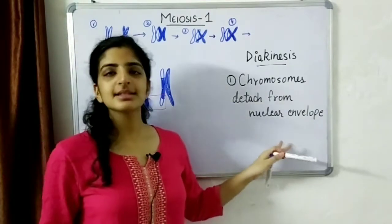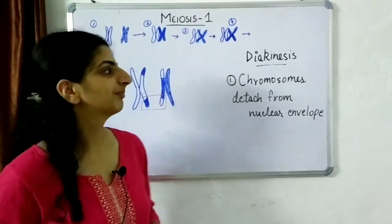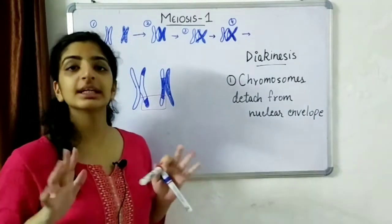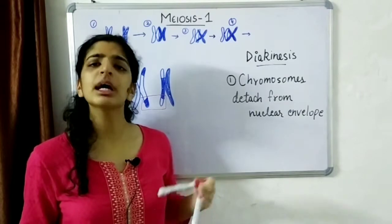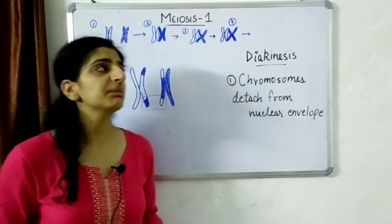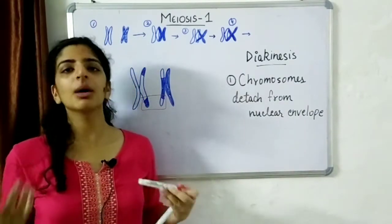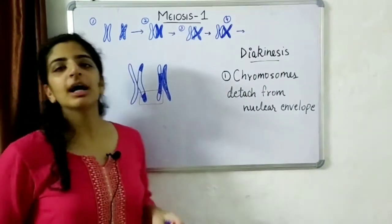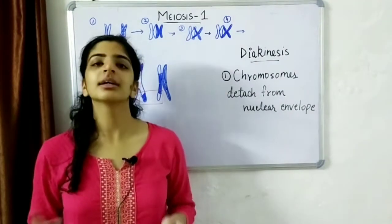Diakinesis is the last stage of Prophase 1. This is where the chromosomes detach from the nuclear envelope — you may remember that in the leptotene phase they had formed a bouquet-like structure. This marks the end of Prophase 1.